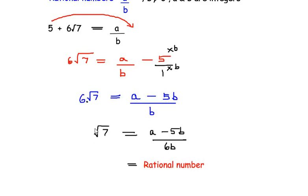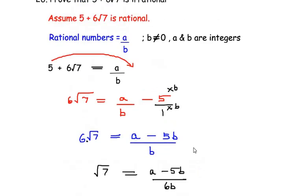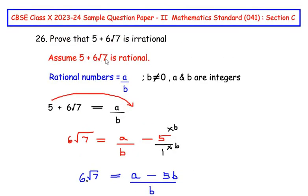But we also know that square root numbers, cube root numbers, fourth root numbers or nth root numbers all belong to irrational numbers. So square root of 7 is irrational number. So irrational number cannot be equal to the rational number. So the assumption which we made that 5 plus 6 root 7 is rational is going to be incorrect. Hence 5 plus 6 root 7 is irrational number.